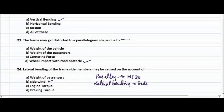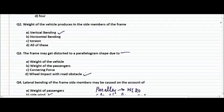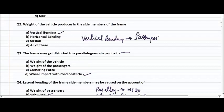And if you look at question number two, wherein vertical bending is asked, it's the passenger's weight.